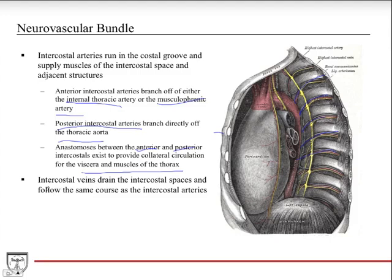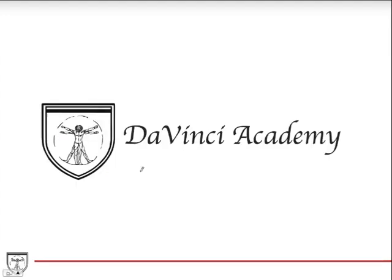The intercostal veins drain the intercostal spaces and follow the same course as the intercostal arteries. That closes out our first lecture for the thorax — the thoracic cage.